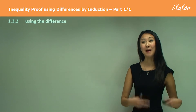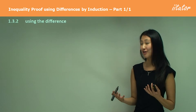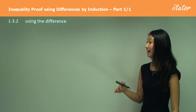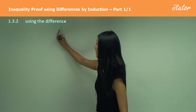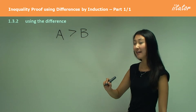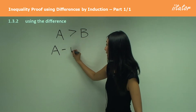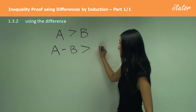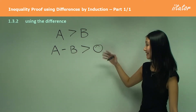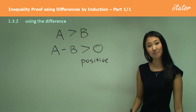We just went through basic induction using inequalities, and this is a new method called using the difference within inequalities. If we want to prove that the left hand side A is greater than the right hand side B, we can move B to the other side: A minus B is greater than zero. So as long as we can find that this number is positive, we can say that A must be greater than B.